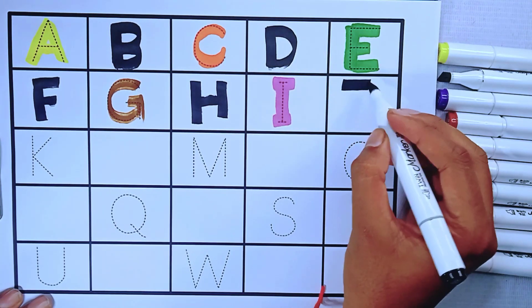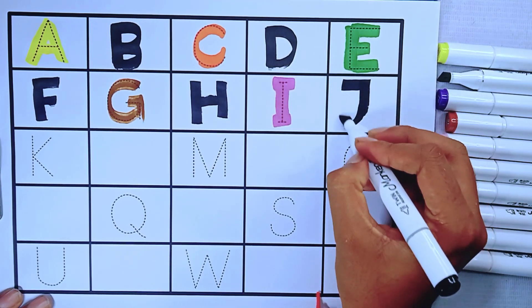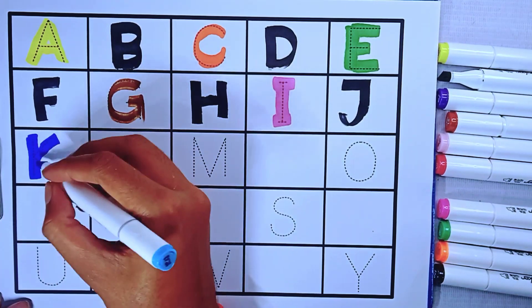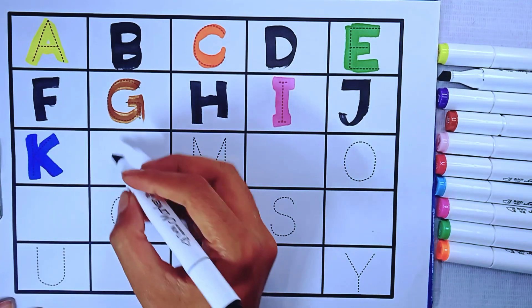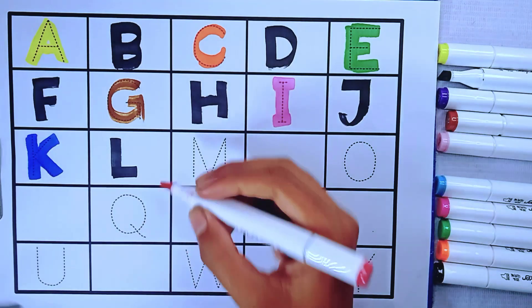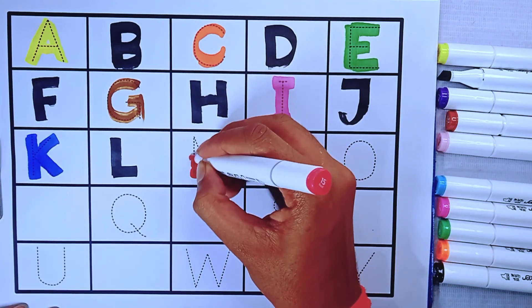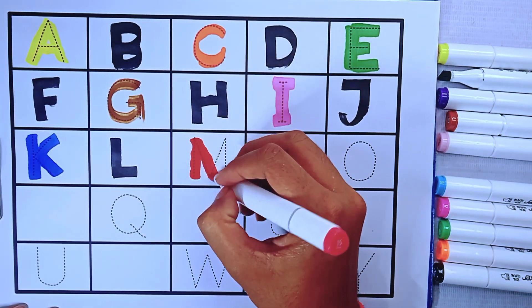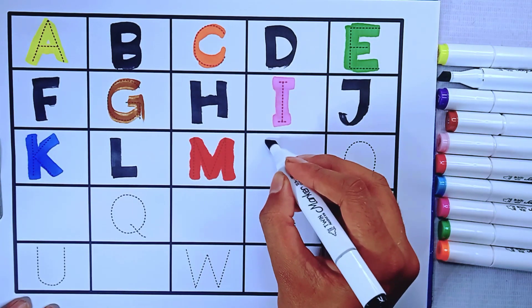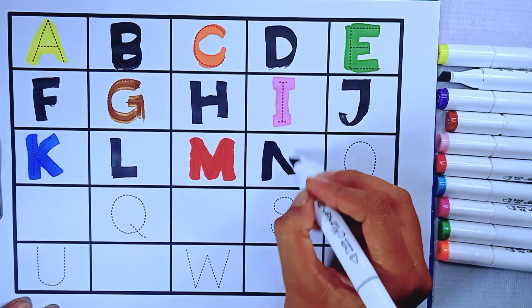J is for Jump, K is for Kite, L is for Lion, M is for Mango. A, B, C, D, E, F, G, H, I, J, K, L, M. N is for Nest.